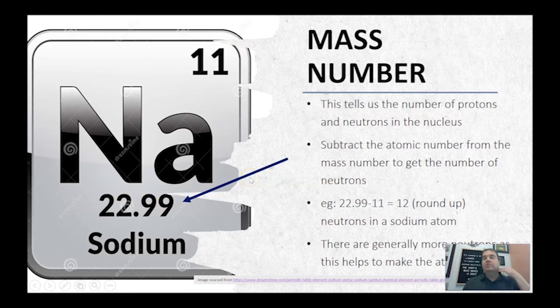The mass number is really important because we use that when we're doing calculations in chemistry. And we'll get into that a little bit later in this topic. But there's generally more neutrons in the nucleus than there are protons. That just helps to make atoms stable and absorbs some of the energy that overcomes the electrostatic charges that occur between the positive protons in there.